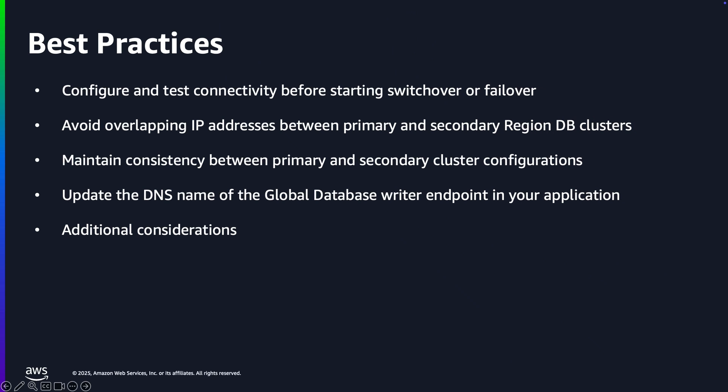Aurora publishes RDS event 0397 when the Global Database Writer endpoint's DNS update is complete. Monitor this event to manage your application's DNS cache and ensure proper endpoint resolution. During the Global Database failover, Aurora halts writes to the primary cluster and emits RDS events on success. These events are recorded on the old primary if it is reachable, or otherwise on the new primary, helping monitor potential split-brain scenarios.